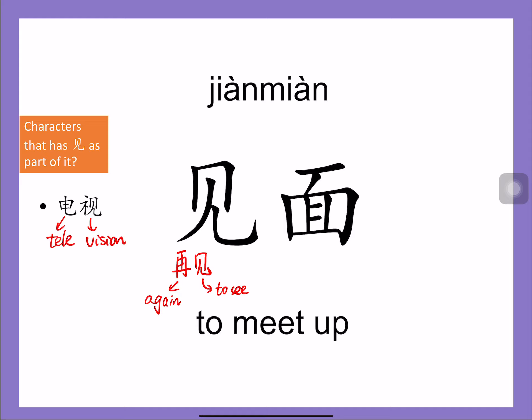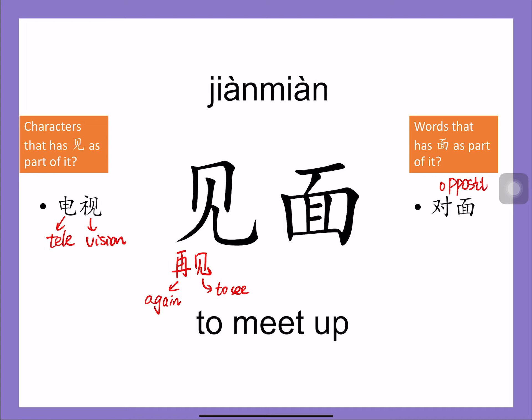What about 面? Can you think of any words that have 面 as part of them? We have 面包; we also have 对面, which is the word we learned recently meaning 'opposite'. 面 means side or face, so 对面 is the opposite side. And we have 面条, noodles, because 面 also means flour or wheat. 跟我读 见面.